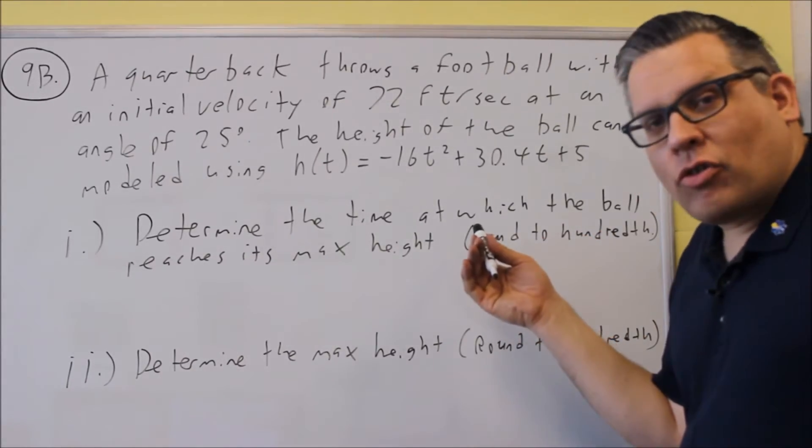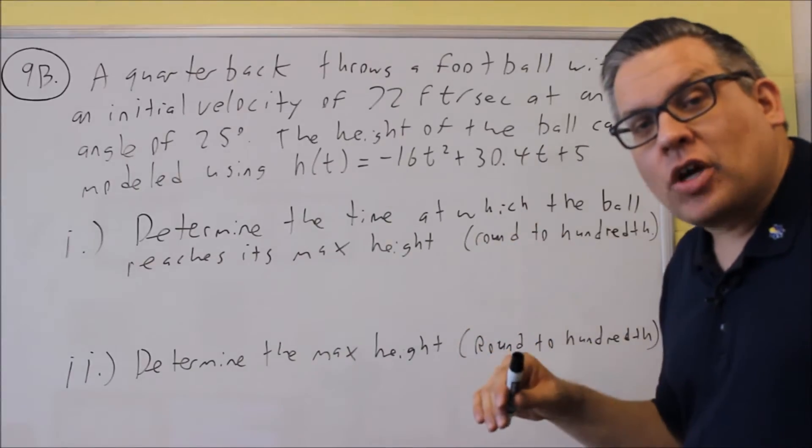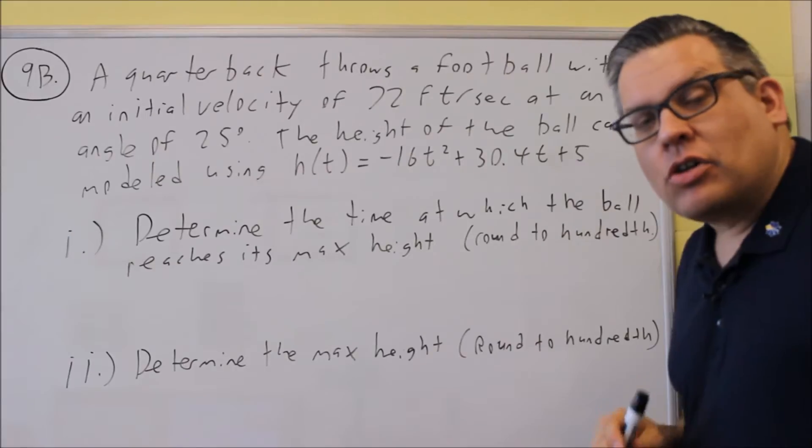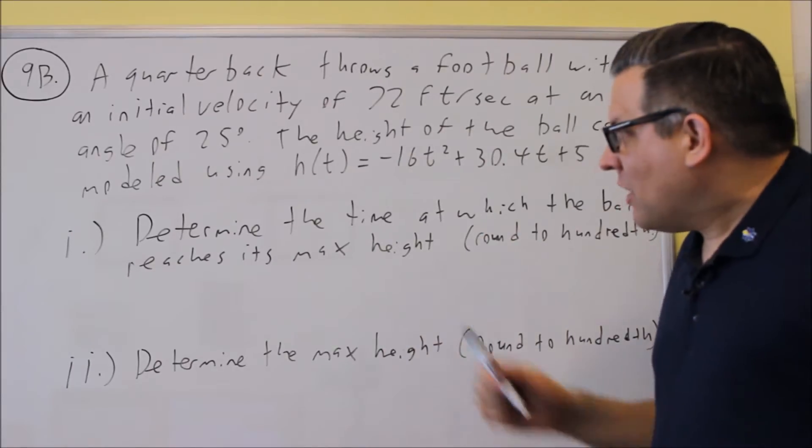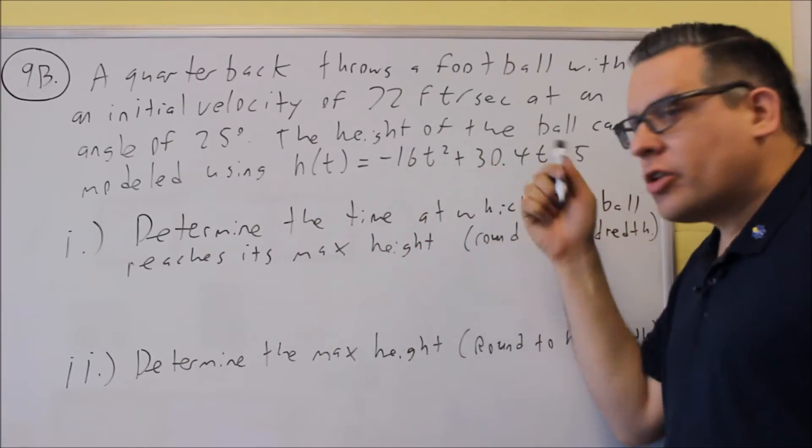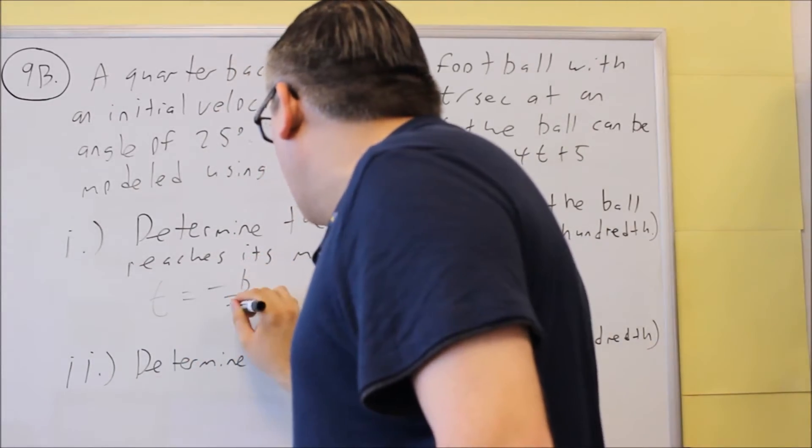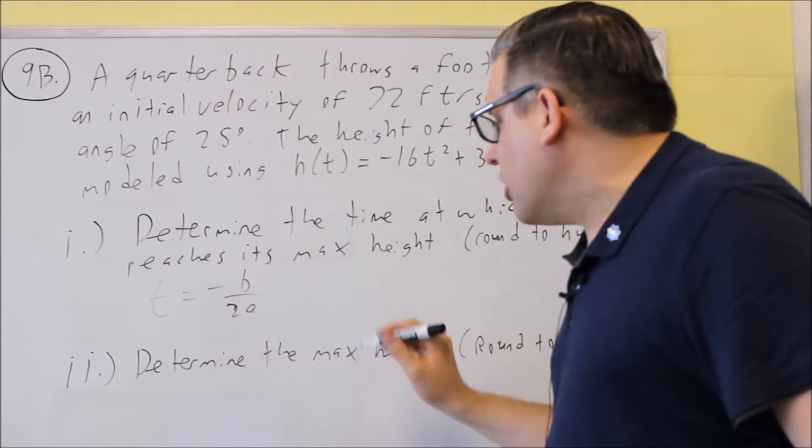All that's really asking you for is to use the negative B over 2A formula. Whenever it says min or max, and you have a quadratic that's given, you've got to use the vertex formula. Now, since the independent variable here is T, we're going to use T equals negative B over 2A.